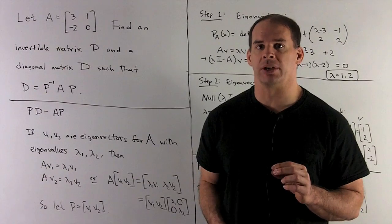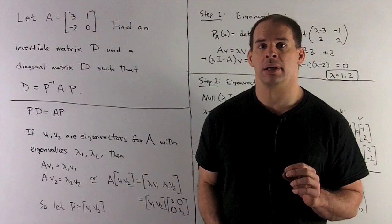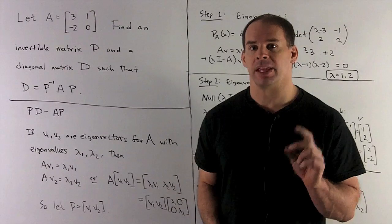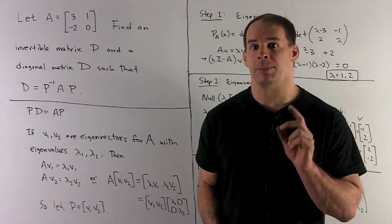Let A be equal to the 2 by 2 matrix, 3, 1, minus 2, 0. Find an invertible matrix P and a diagonal matrix D such that D equals P inverse AP.